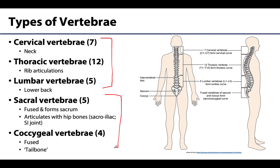Starting with the movable vertebrae, beginning superiorly, are the seven cervical vertebrae. We'll get into how to distinguish vertebrae from one another in another learning objective video. The cervical vertebrae are superior, associated with the neck, and are named C1 through C7, with C1 being the most superior and moving inferiorly.